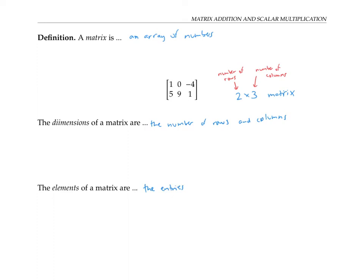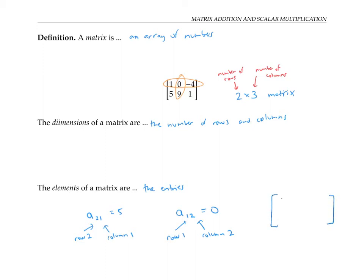Sometimes these elements are indexed by their row number and column number. So for example, if I want the element A₂₁, that would be the element in the second row and the first column — so that would be the number zero. Sometimes you'll see a whole matrix listed out with this abstract notation: a₁₁, a₁₂, a₁₃, a₂₁, a₂₂, a₂₃ is the correct ordering for the entries in this two by three matrix.